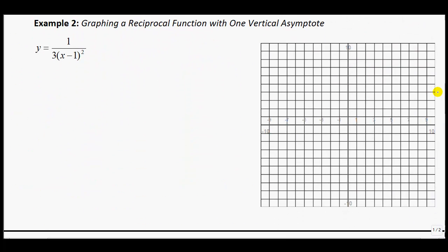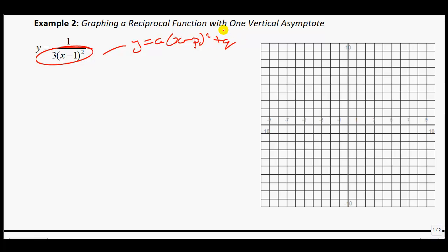Example 2 is a case with one vertical asymptote. I'll graph the function in red. Notice it's in the form y equals a times (x minus p) squared plus q. Since there's no q term, the vertex doesn't move up or down, but it moves 1 in the positive direction, so the vertex is right on the x-axis. Since there's a 3 in front, instead of going over 1 up 1, you go over 1 up 3. The next point would be over 2, up 12 — we can estimate where that would be. So the graph looks approximately like that.